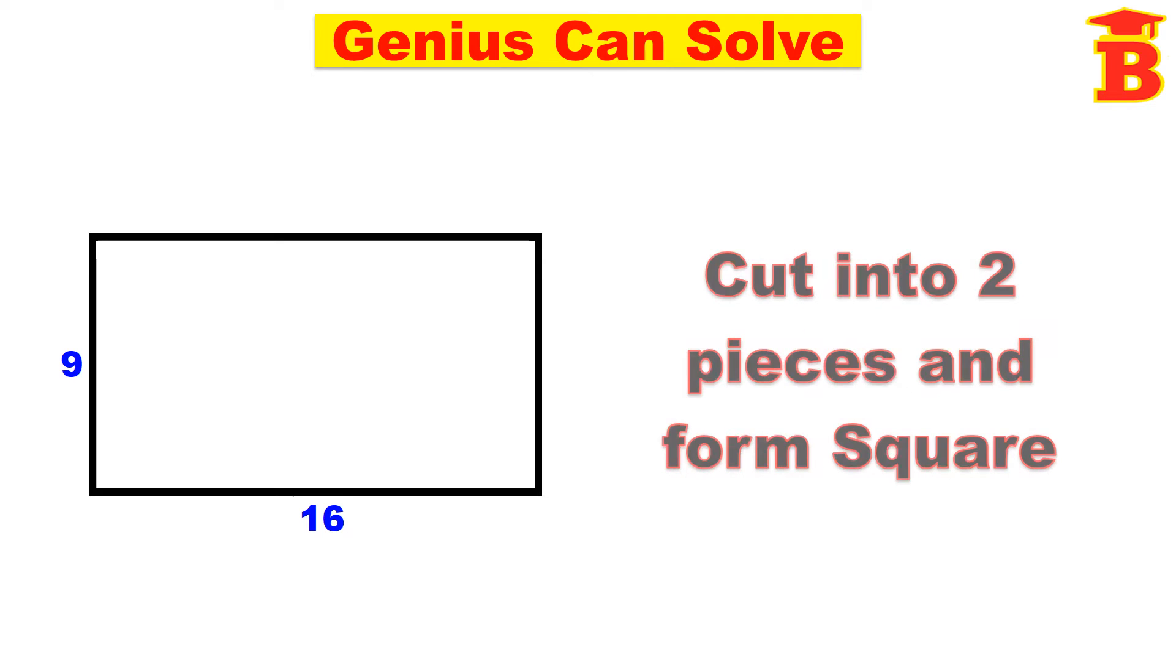Now the question is, we have to cut the rectangle into 2 pieces and form a square. We can cut the rectangle anywhere like this, but we have to cut it into 2 pieces only and form a square using those 2 pieces.